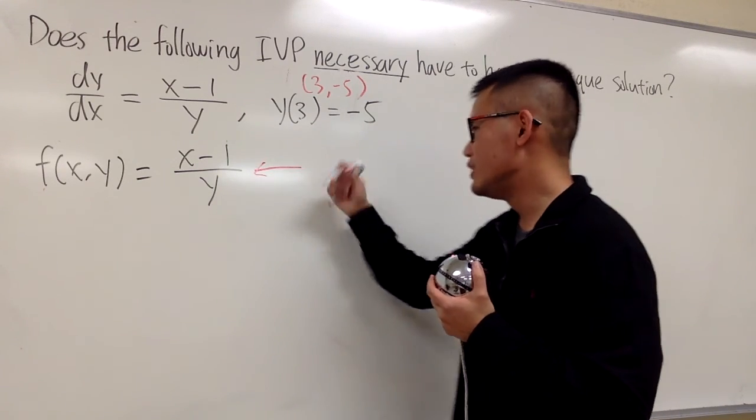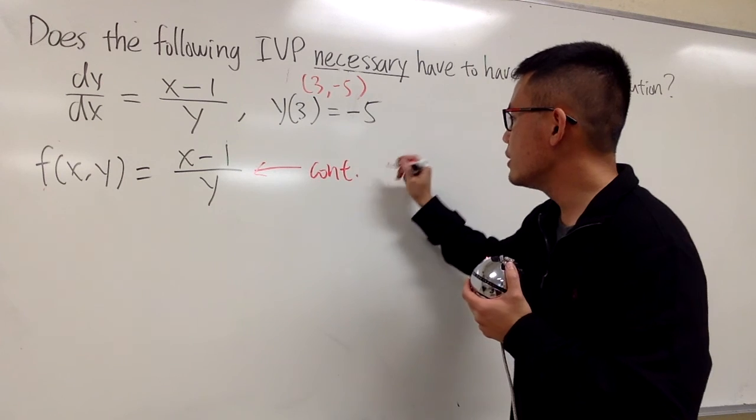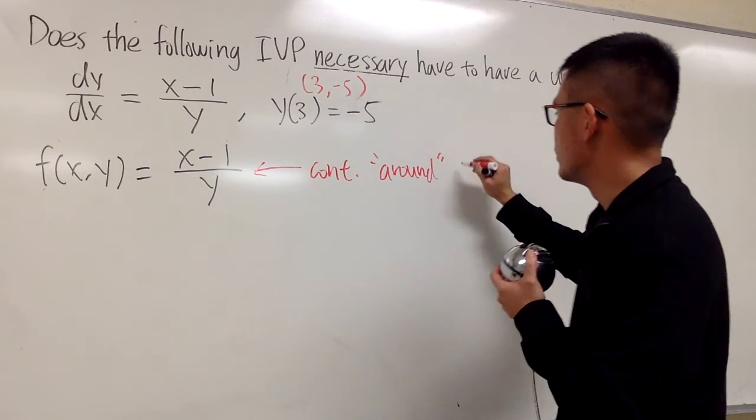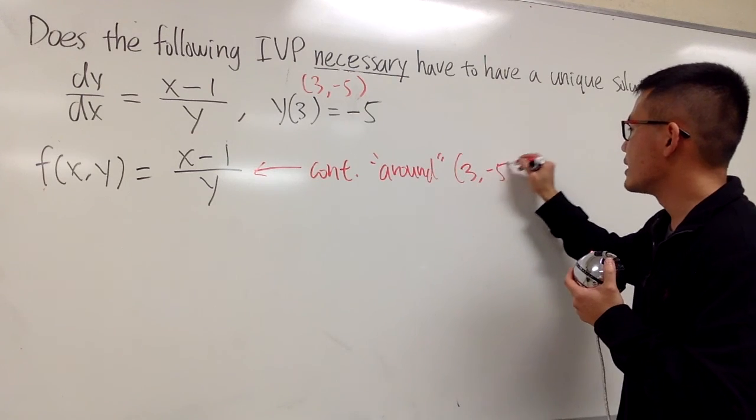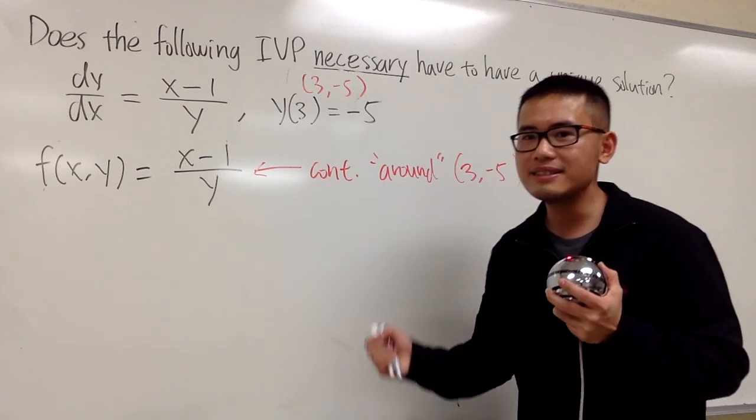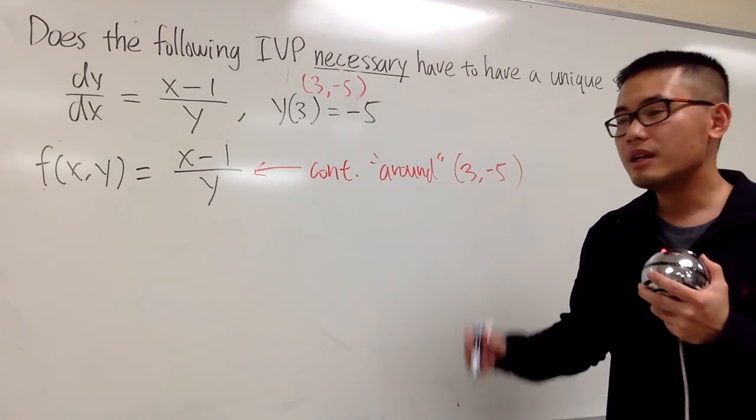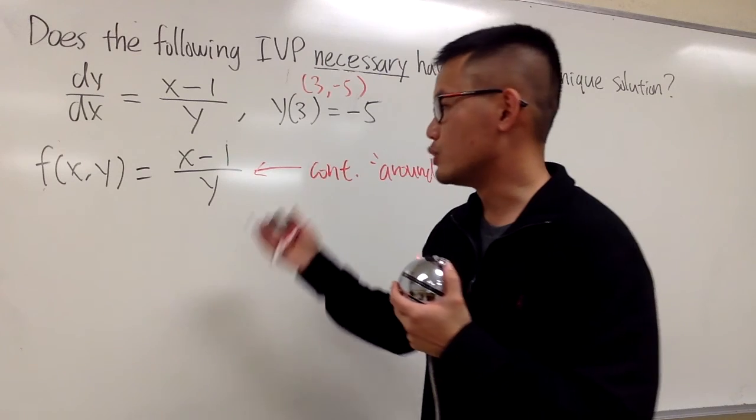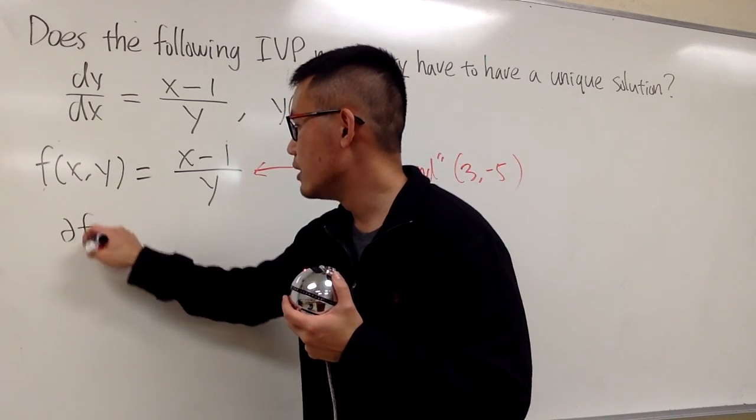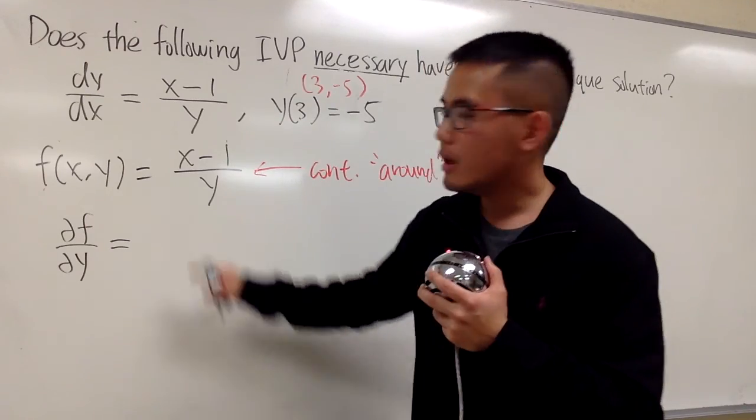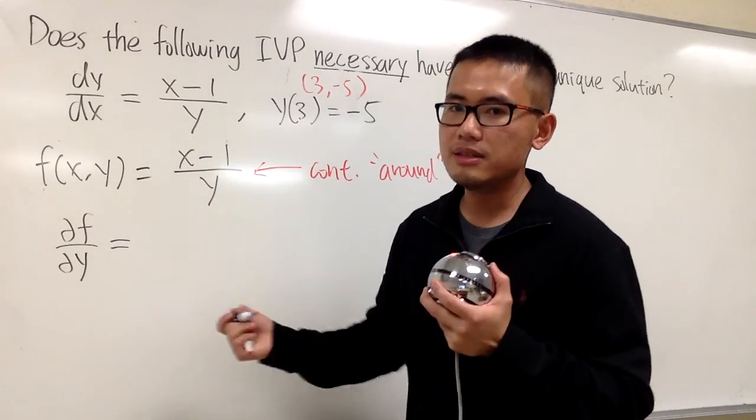Just really write it down. This is continuous around this point, which is 3 comma -5. And this is the first criteria for the existence and uniqueness theorem, right? The next one is, we have to look at this and do the partial derivative with respect to y.